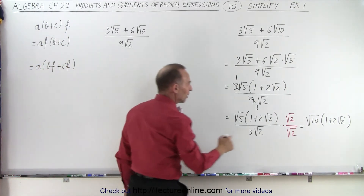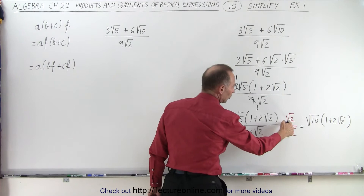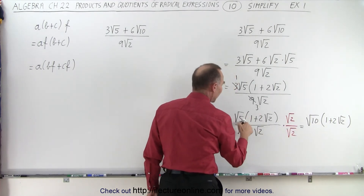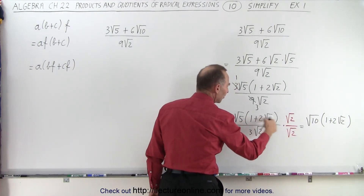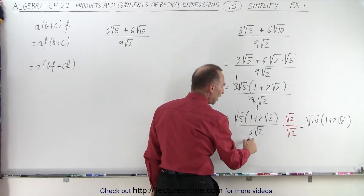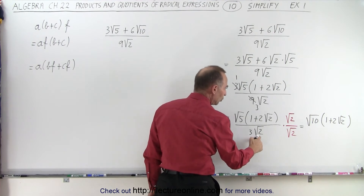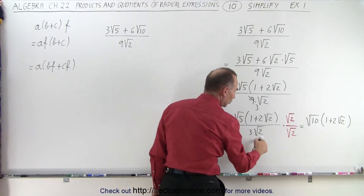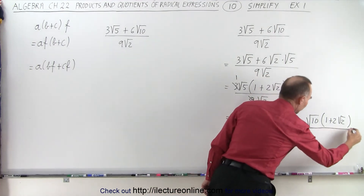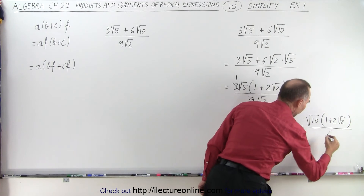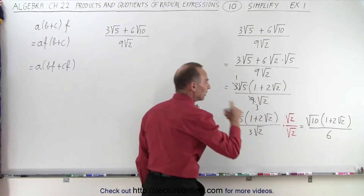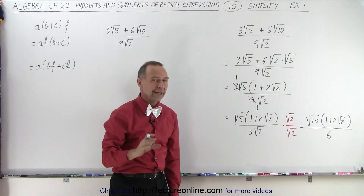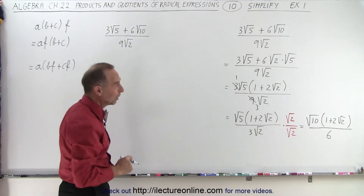We do the same here — we only multiply the square root of 2 times the square root of 5, and not what's inside the parentheses. In the denominator, the square root of 2 times the square root of 2 is simply 2, times 3 gives us 6. So the denominator becomes 6, and that is how we simplify that.